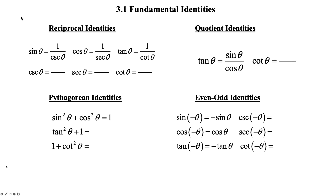Upon request, let's get started here with chapter 3, section 3.1: fundamental identities. Just a quick review here. We have sine of theta is 1 over cosecant theta, cosine theta is 1 over secant theta, and tangent theta is 1 over cotangent theta. Those are our three main reciprocal identities.